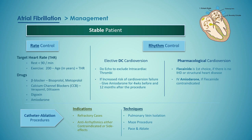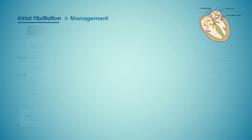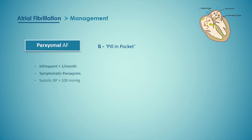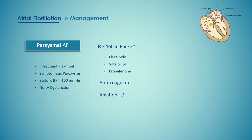Ablation is an attractive treatment option when drugs are ineffective or poorly tolerated, but the procedure may be complicated by cardiac tamponade, stroke, phrenic nerve injury, and rarely pulmonary vein stenosis. In patients with paroxysmal AF with infrequent symptomatic paroxysms occurring less than once a month, systolic blood pressure above 100 mmHg, and no history of left ventricular dysfunction, the pill-in-the-pocket method may be tried — meaning flecainide, sotalol, or propafenone may be used on a required basis. Anticoagulate and consider ablation if the patient is symptomatic or has frequent episodes of paroxysmal AF.